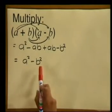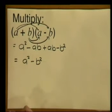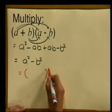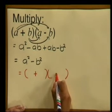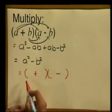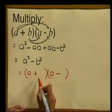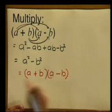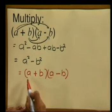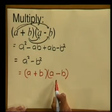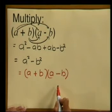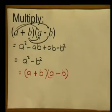Now if we reverse this process of multiplication and factorize a squared minus b squared, all we need to do is take the square root of each term. We start off putting down our two brackets — we know one is going to have a plus sign in it and one is going to have a minus sign. Then we square root the first term: a squared square rooted gives us a, and that goes in the first place in each bracket. Then we square root b squared and we are left with b. In one bracket we have the sum of the square roots, and in the other bracket we have the difference of the square roots.